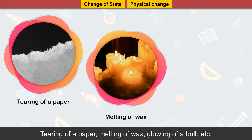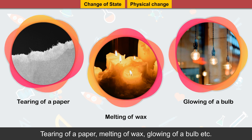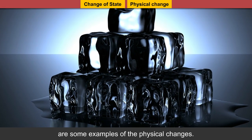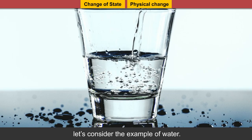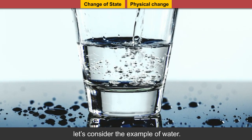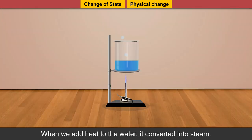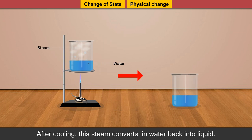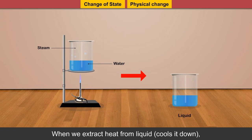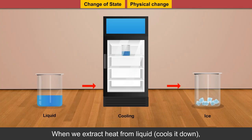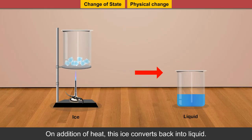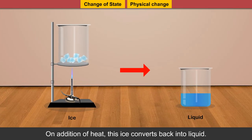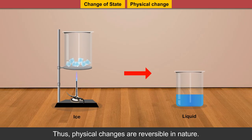Physical changes are those changes in which no new substance is formed. Usually, physical changes are reversible in nature. That is why they are also known as temporary change. All the processes of interconversion of states result in physical change. Tearing of a paper, melting of wax, glowing of a bulb, etc. are some examples of physical changes. To understand the reversibility phenomenon, let's consider the example of water. When we add heat to the water, it converts into steam. After cooling, the steam converts back into liquid. When we extract heat from liquid or cool it down, it converts into ice. On addition of heat, this ice converts back into liquid. Thus, physical changes are reversible in nature.